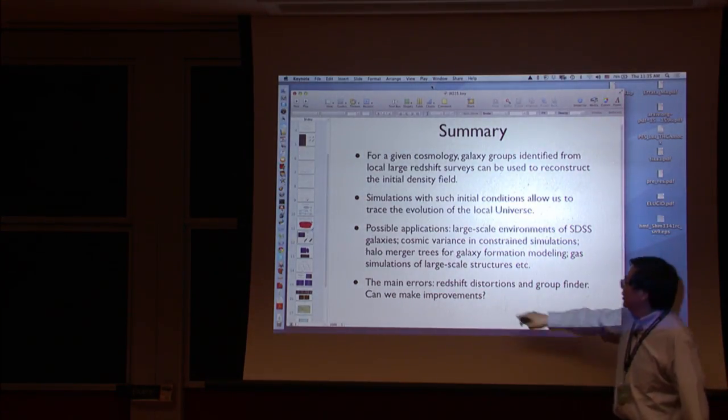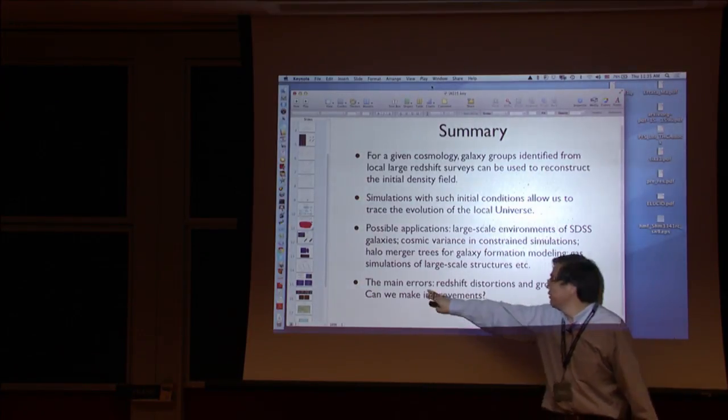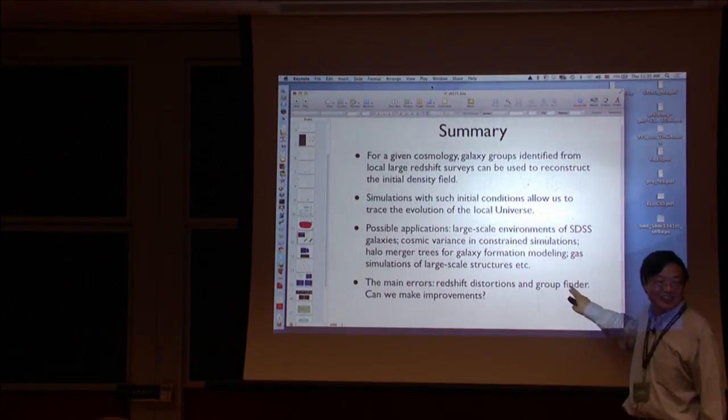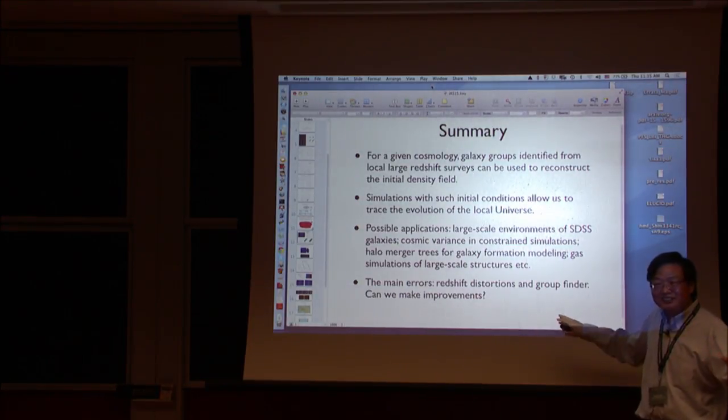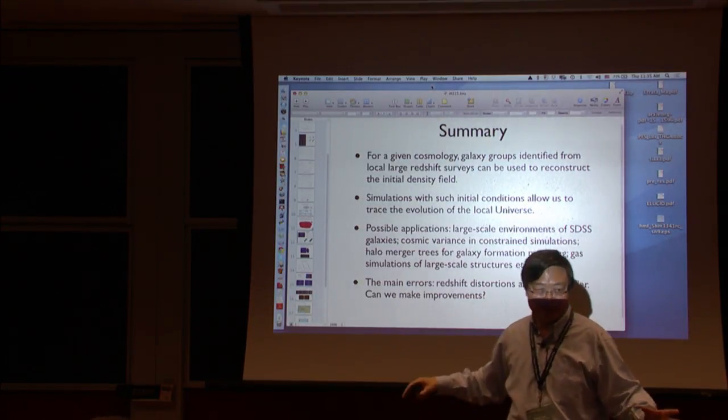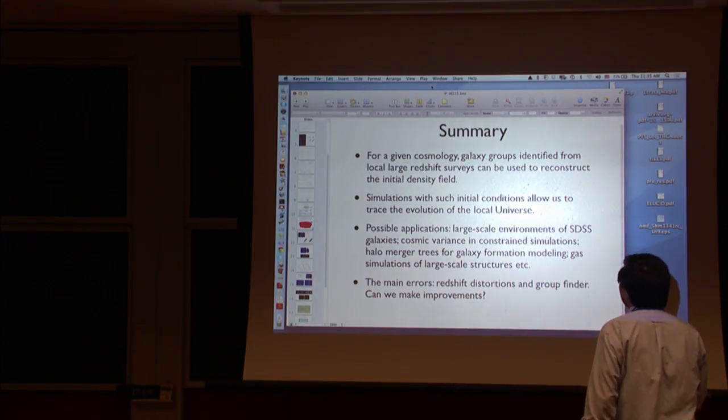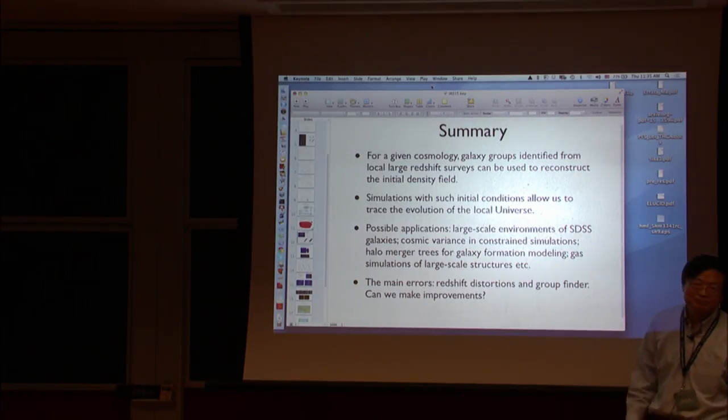So that's the summary, I don't need to read this. The only two things that I want to have your feedback is, how do I deal better with the redshift distortion? How do I have even better tracers, even though groups are quite good compared to galaxies themselves? At least it's not biased when you do the construction. But it introduced suddenly scattering.